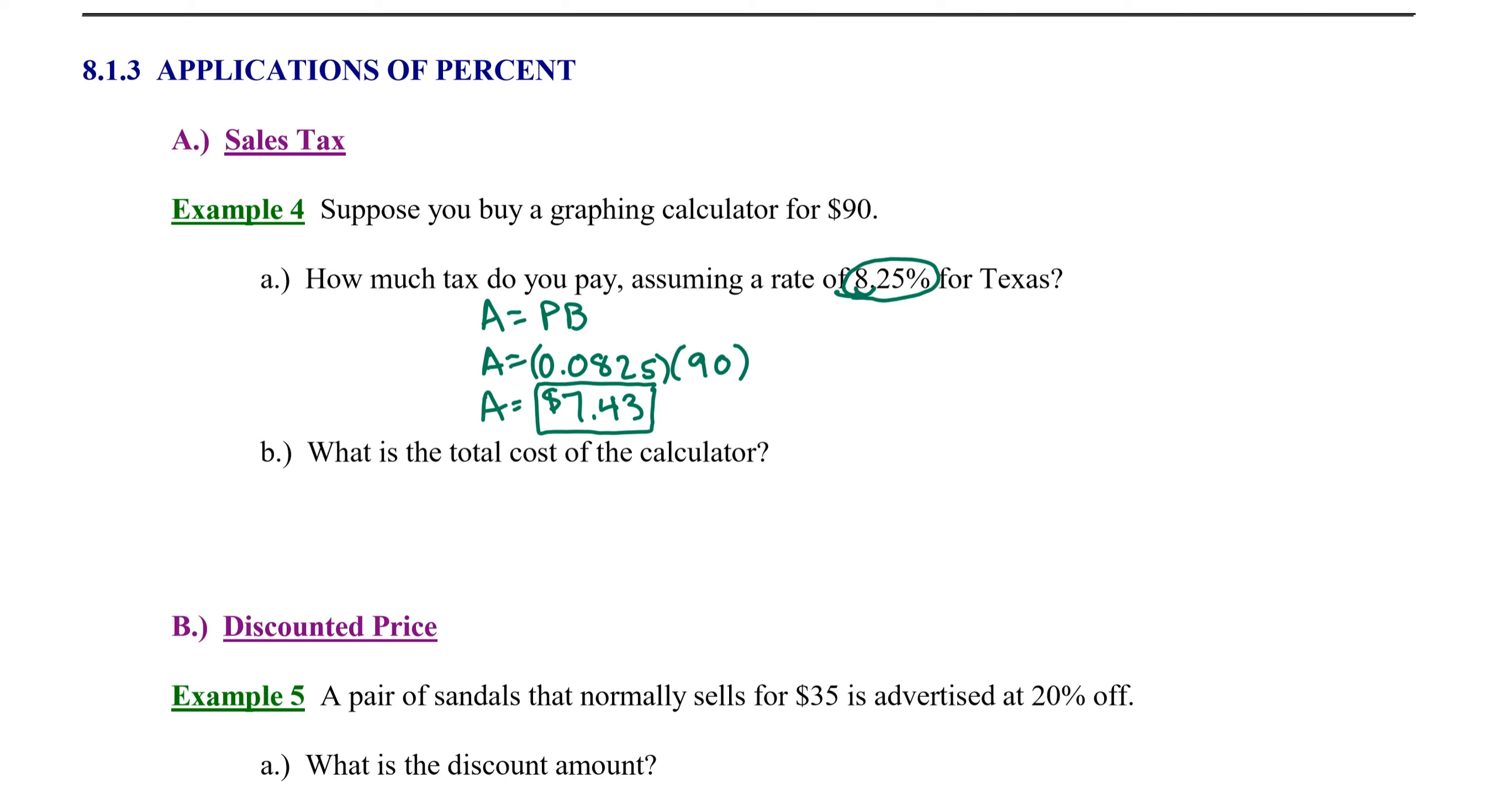Part B: What is the total cost of the calculator? The total cost is the price of the calculator, which was $90, plus the sales tax we paid, $7.43. So our total cost would be $97.43. Remember we use the dollar sign when expressing amounts of money.